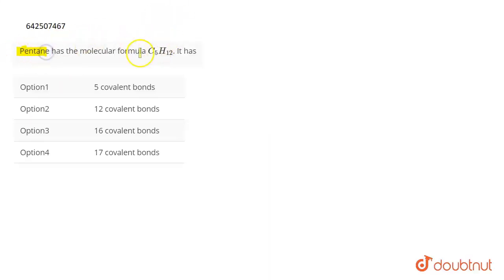The question is: pentane has the molecular formula C5H12. It has how many covalent bonds? So if we draw the structure of pentane, which is C5H12, this means it is an alkane. So it is an alkane, which means that it does not contain any double or triple bond.